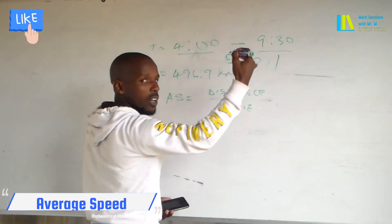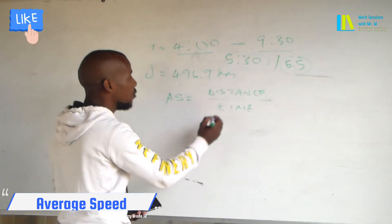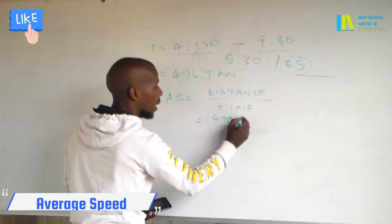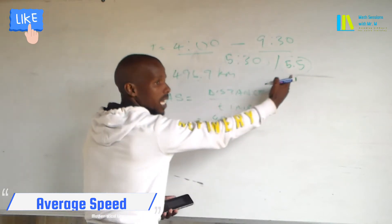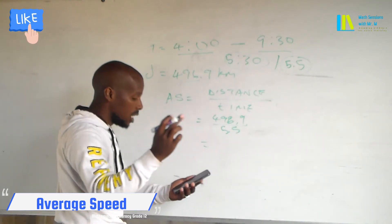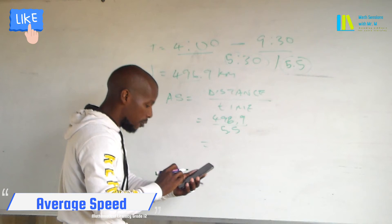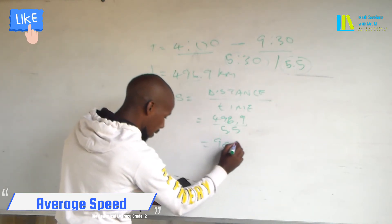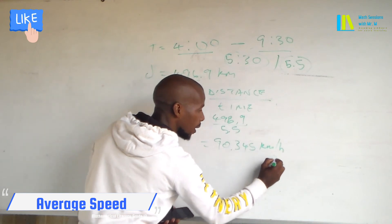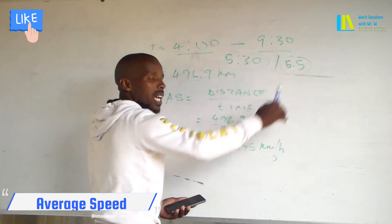Now, 5 hours 30 minutes is basically 5 and a half, so you use 5.5, which makes things very easy to calculate. Therefore, we take the distance of 496.9 km and divide it by the time of 5.5 hours. When you punch everything into a calculator, 496.9 divided by 5.5 gives you 90.345, which rounds to 90 kilometres per hour. That is the average speed they must travel to arrive on time.